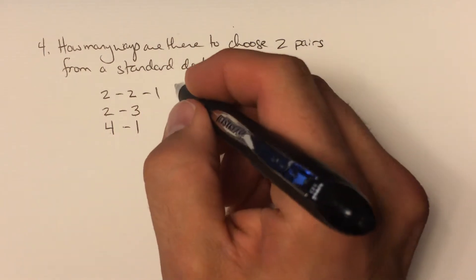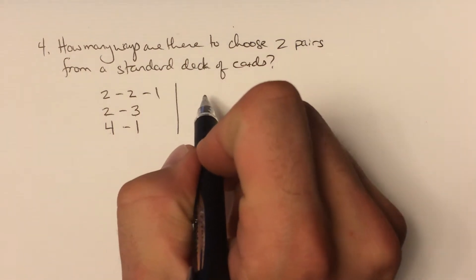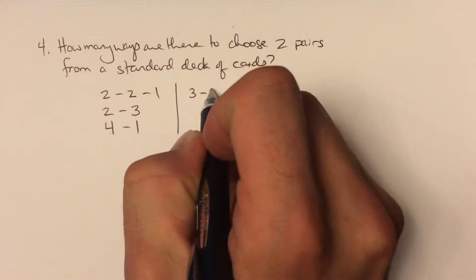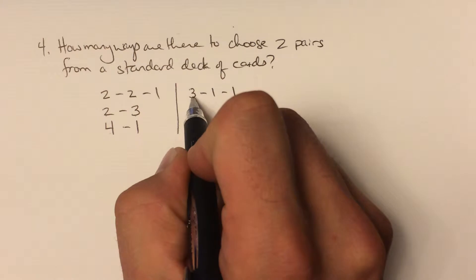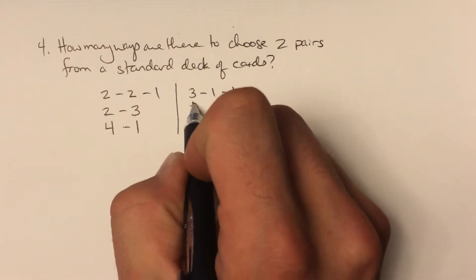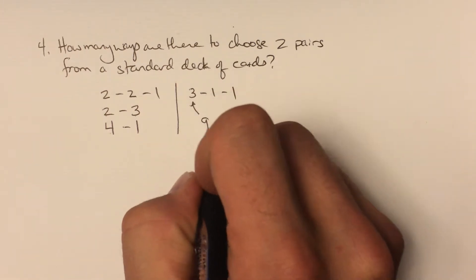There is one other possible case if we weren't talking about poker: you could have three of one card and then one of each of two other values. These three cards would form pairs.